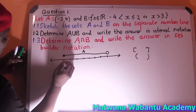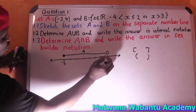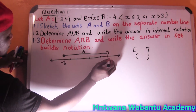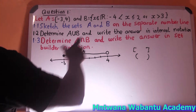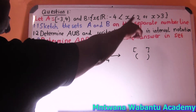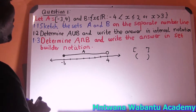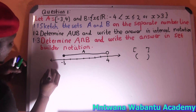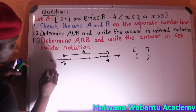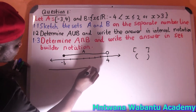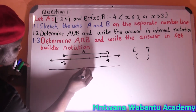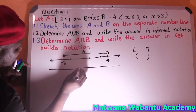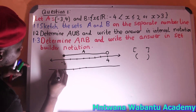Now we go for Set B. B starts from negative 4 to 2, and then from 3 to 4. So let me draw the number line for B. If this is 0, then we have 1, 2, 3, 4.